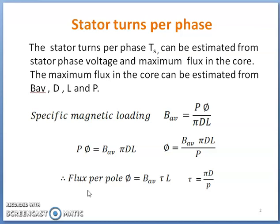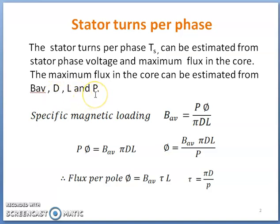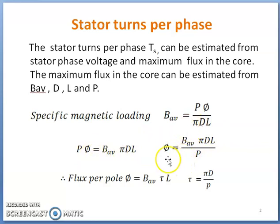The stator turns per phase Ts can be estimated from the stator phase voltage and maximum flux in the core. The maximum flux in the core can be estimated from specific magnetic loading and main dimensions of the machine. Specific magnetic loading B_average is given by B_average equals P*phi divided by pi*d*l, so P*phi equals B_average*pi*d*l. Then flux per pole phi equals B_average*pi*d*l divided by P, and tau (pole pitch) equals pi*d by P, so flux per pole phi equals B_average*tau*l.